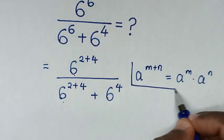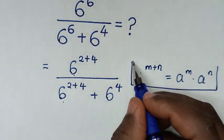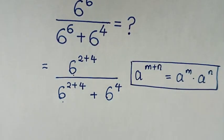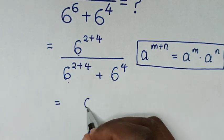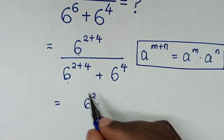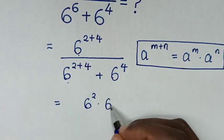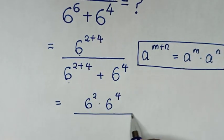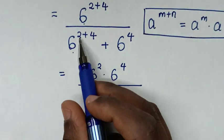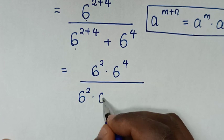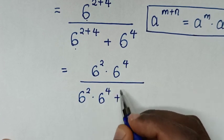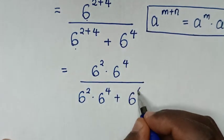Then it will be equal to 6 square times 6 power 4, over 6 square times 6 power 4, then plus this 6 power 4.